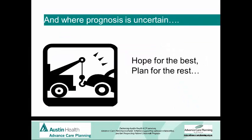What about where prognosis is uncertain? I take out car insurance not because I'm going to have an accident tomorrow, but at least if I have an accident I know who I'm going to call and what I'm going to do. I think we can do advanced care planning where we don't know what's going to happen. We can talk to patients, and hopefully they can plan for the rest. Most of what we do, we don't exactly know prognosis, and I think we need to skill our staff up in how we talk around that.